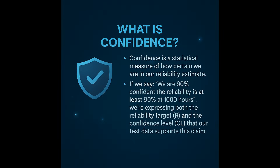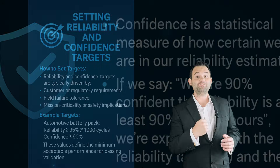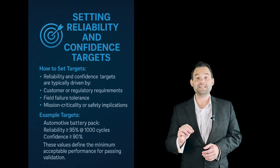Let's now define what confidence is. Confidence is a statistical measure of how certain we are in our reliability estimate. If we say we are 90% confident the reliability is at least 90% at 1,000 hours, we're expressing both the reliability target and the confidence level that our test data supports this claim. Reliability tells us how good the product is; confidence tells us how sure we are about it.